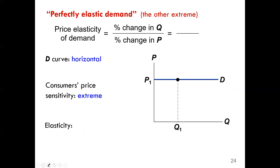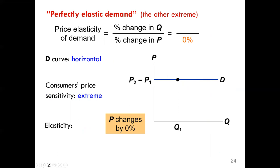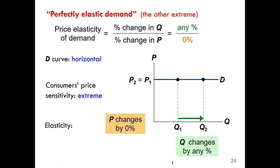The fifth demand curve is perfectly elastic demand. This curve is horizontal, and price sensitivity is extreme — sometimes classified as infinity. When price is fixed, consumers respond by demanding different quantities. Quantity demanded changes by any percentage, resulting in an elasticity of infinity.